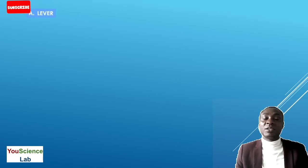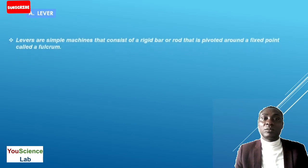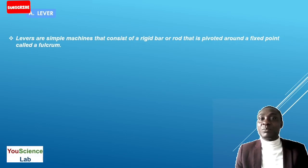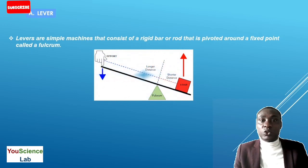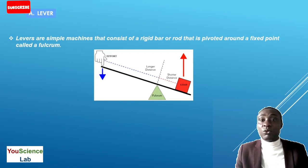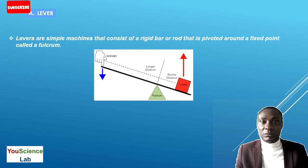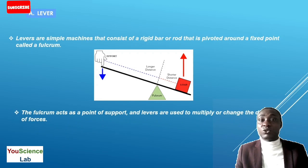The first type is a lever. A lever is a simple machine that consists of a rigid bar or rod that is pivoted around a fixed point called a fulcrum. The lever consists of the fulcrum, also known as the pivot, a point where the effort is applied, and the other end of the bar where the load is to be lifted or moved. The fulcrum acts as a point of support, and levers are used to multiply or change the direction of forces.